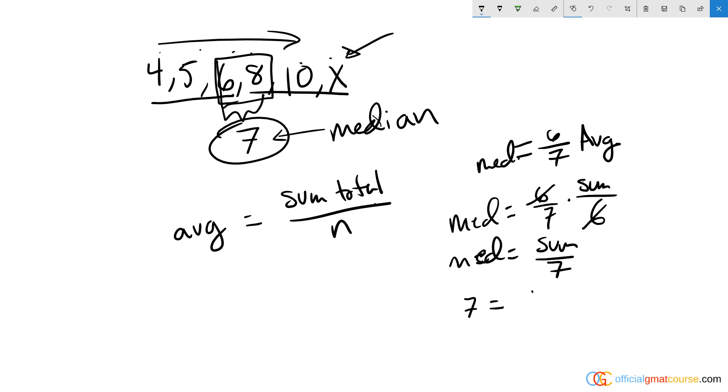Which means I now know that seven equals the sum of these numbers over seven, which means the sum of the numbers is going to equal 49. And if I look at the numbers we have here, I can quickly do some math: I have nine plus six is 15, plus eight is 23, 33.